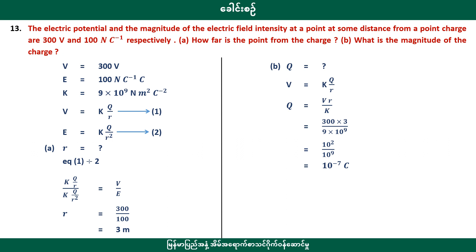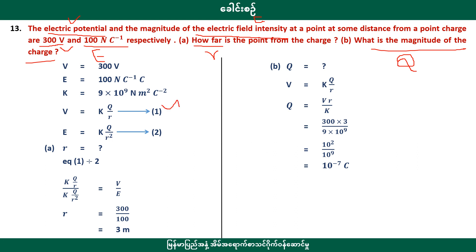It's about finding the electric potential and the magnitude of the electric field intensity at a point at the same distance from the charge. Find the electric potential — V — and the electric field intensity — E — at the same point. How far is the point from the charge? The answer: r is equal to q, meaning we equate V and E to find r.